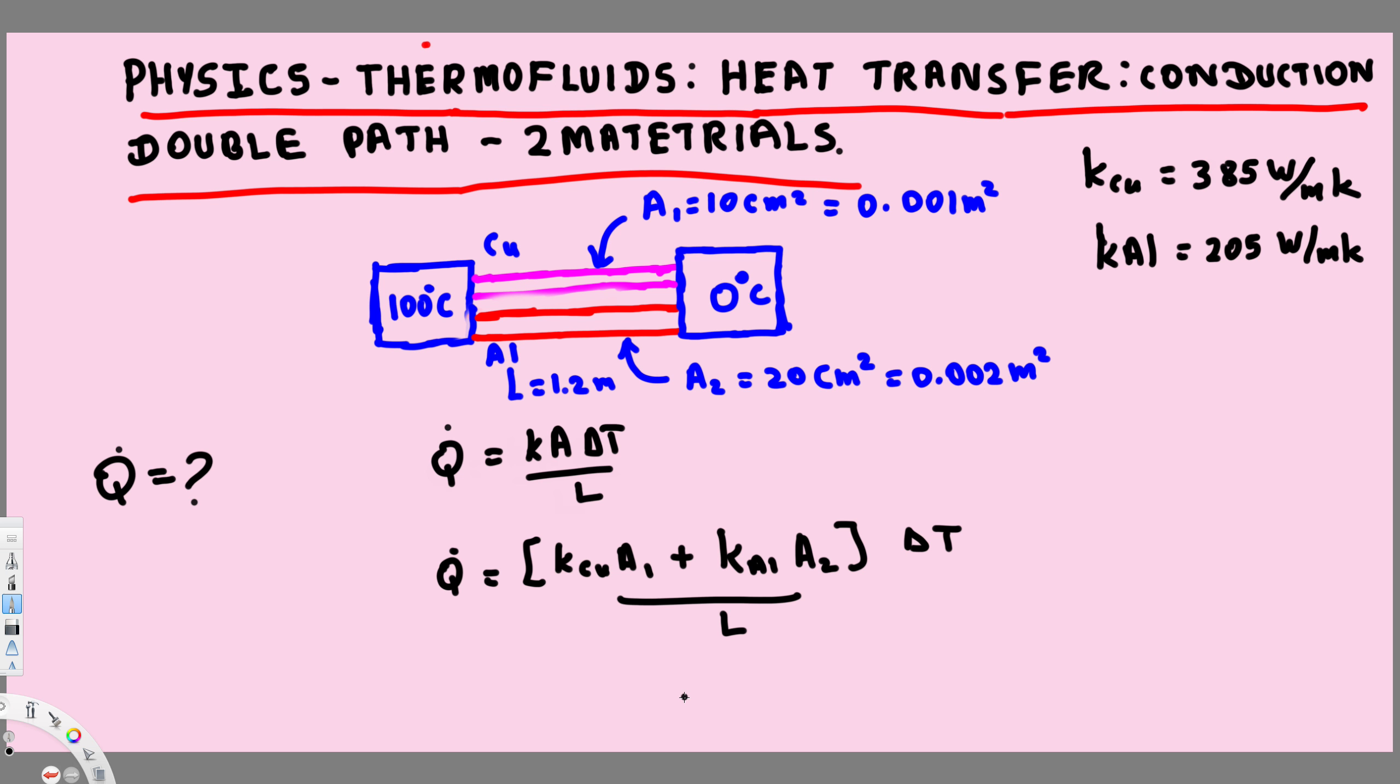Now let's plug in the values and see what we get. k_cu is 385 watts per meter Kelvin times the area. Here we have to put it in terms of meter square, so this is 0.001 meter square. Plus aluminum's thermal conductivity is 205 watts per meter Kelvin.